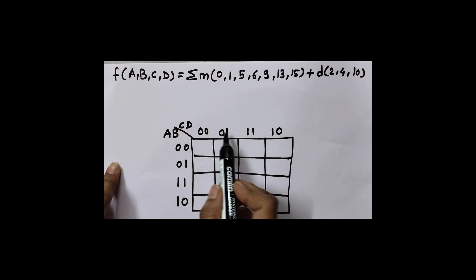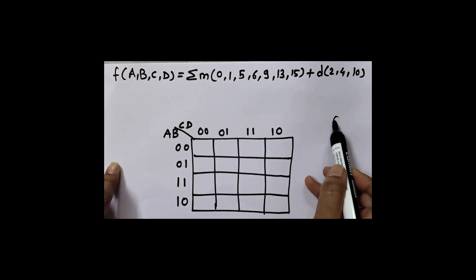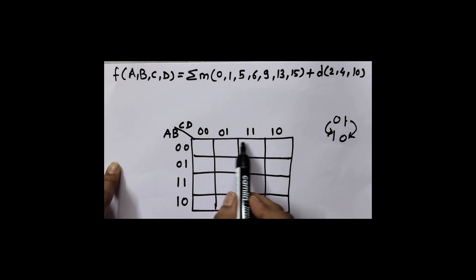We use grey code in K-map because in grey code only one bit changes at a time. In case of binary, after 01 what comes? 10. So here both bits are changed: 1 to 0 and 0 to 1. But that we can't use for making groups, so here we use grey codes.